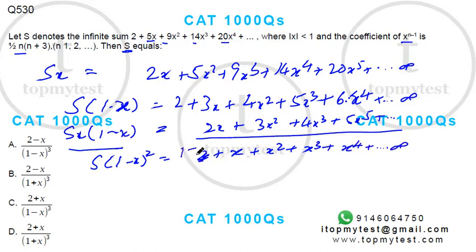Now, I can split 2 as 1 plus 1. If I take this part out, this is the sum of infinite geometric progression. So, this is 1 plus 1 divided by 1 minus x.